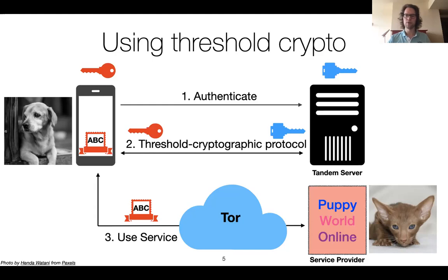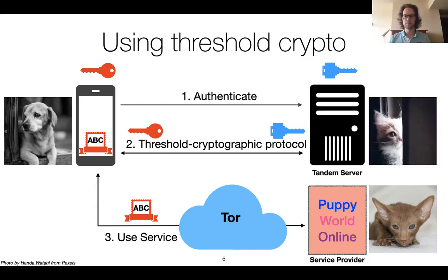However, what happens if the tandem server is controlled by yet another evil kitten? Because the first step of running the threshold cryptographic protocol requires the user to authenticate, there is a time correlation between where the user is authenticated and where the user is anonymous when accessing the service provider — a correlation that no crypto trickery can resolve. Any collusion between these two kittens would completely destroy all the anonymity properties that the PET community has worked hard to achieve, for example on attribute-based credentials. What we would like to do using Tandem is retain those privacy properties of the underlying protocol while still using a tandem server to hold key shares.